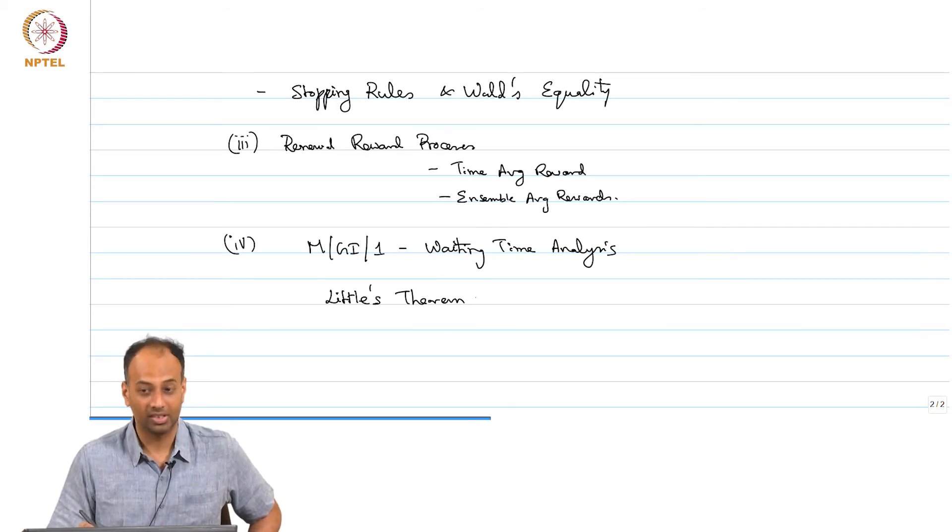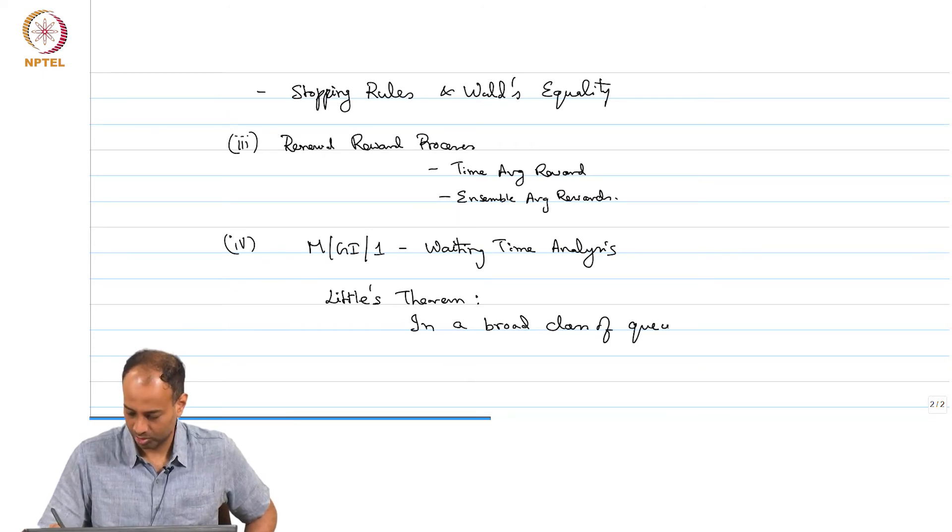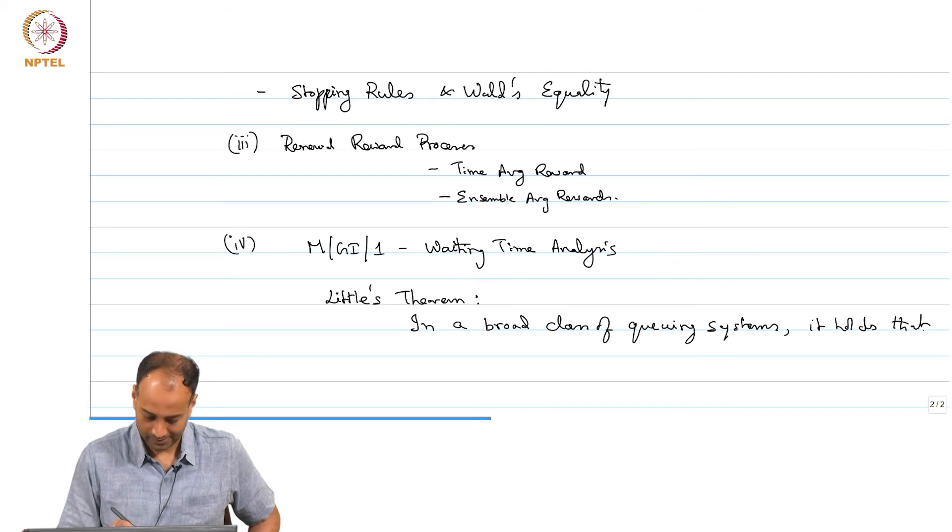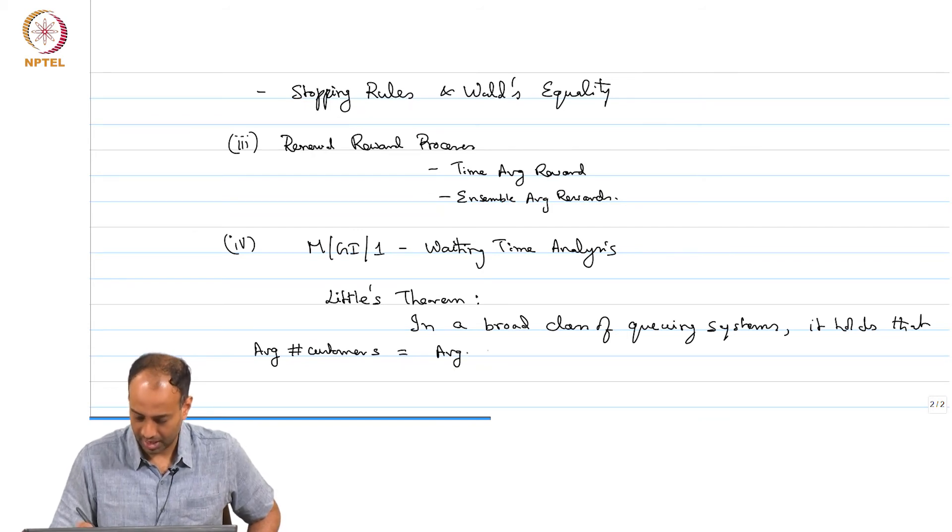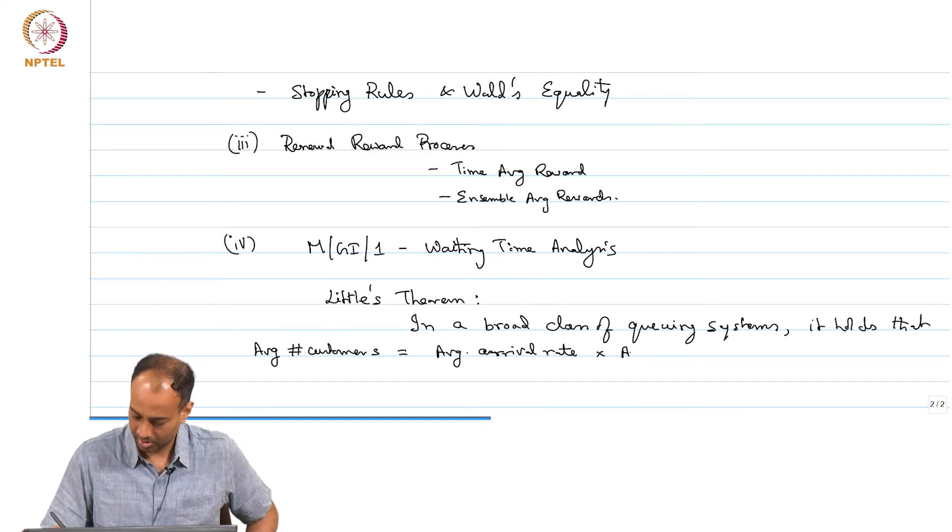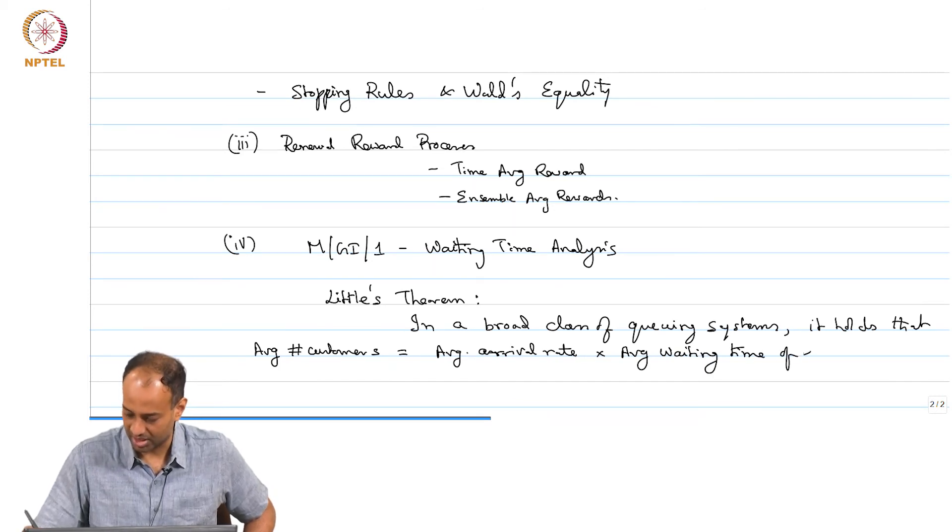We will prove a very important result in queuing known as Little's theorem. Let me just give you a preview of what it is. It basically says that in a broad class of queuing systems it holds that average number of customers equal to average arrival rate times average waiting time of each customer.